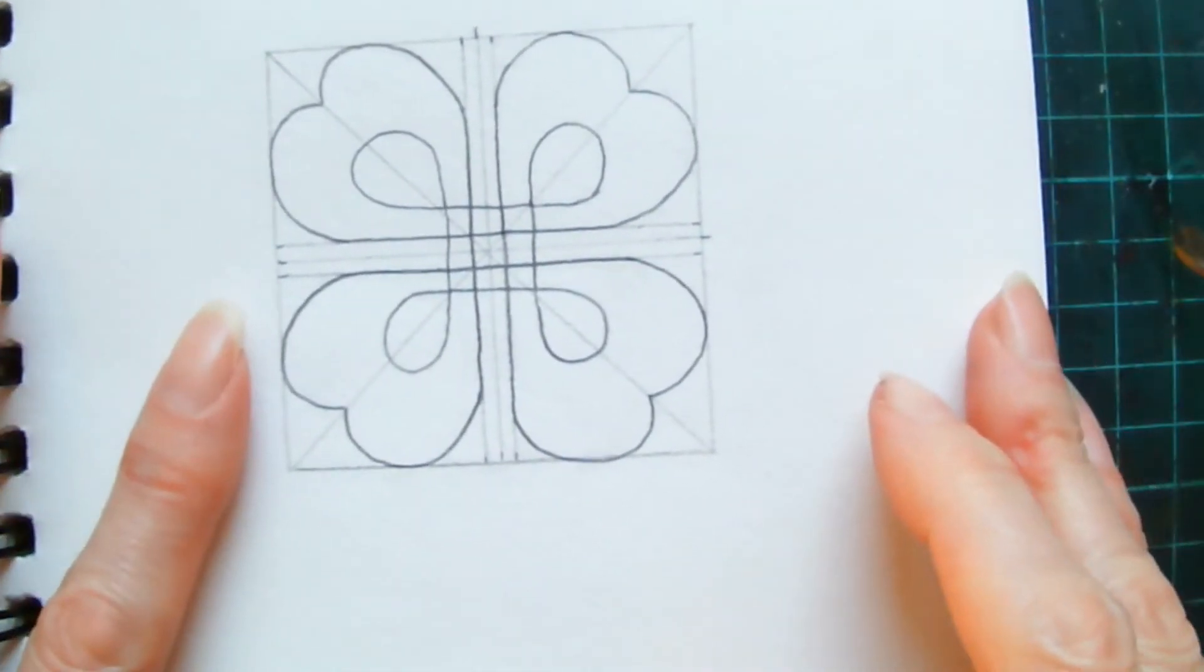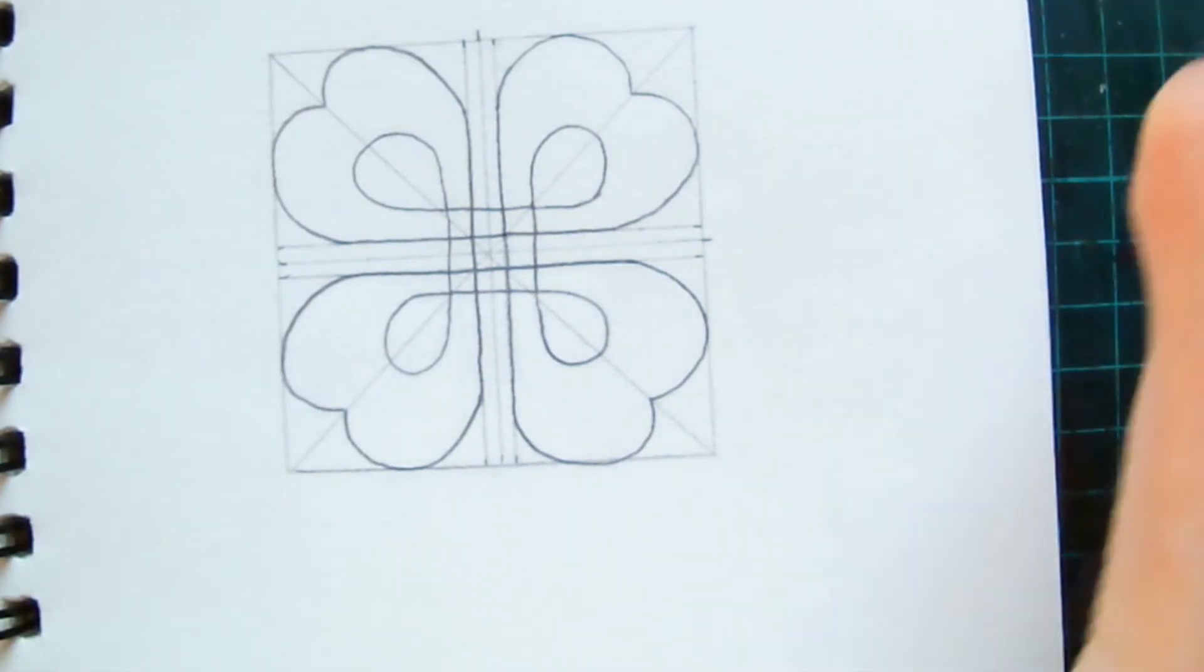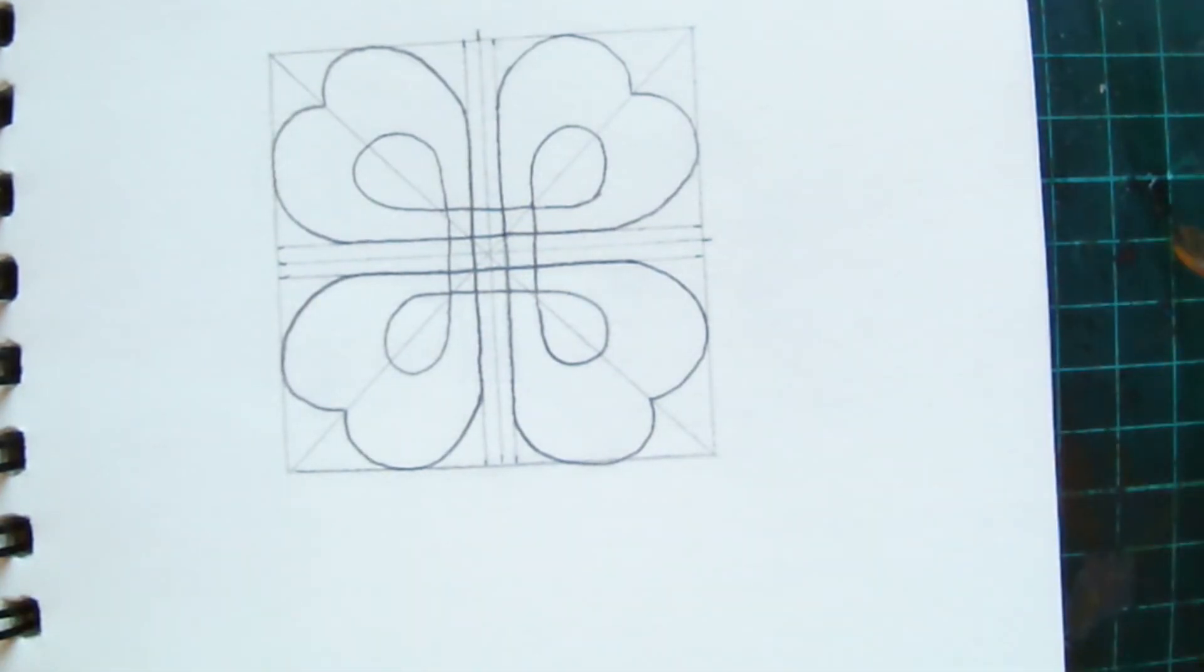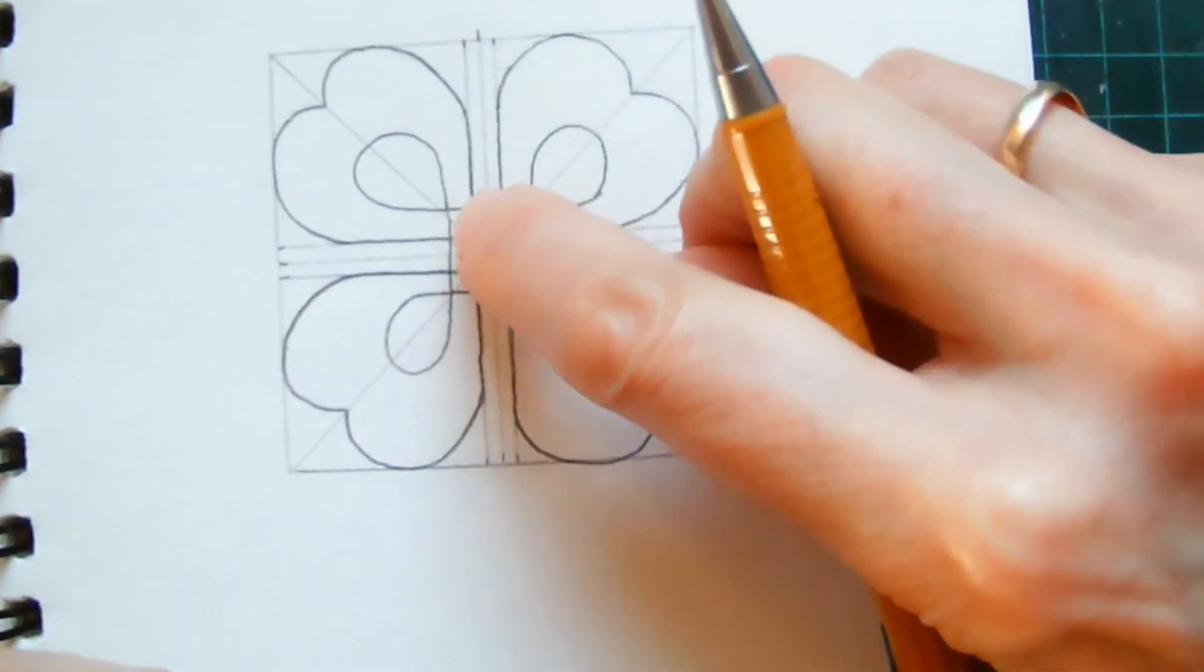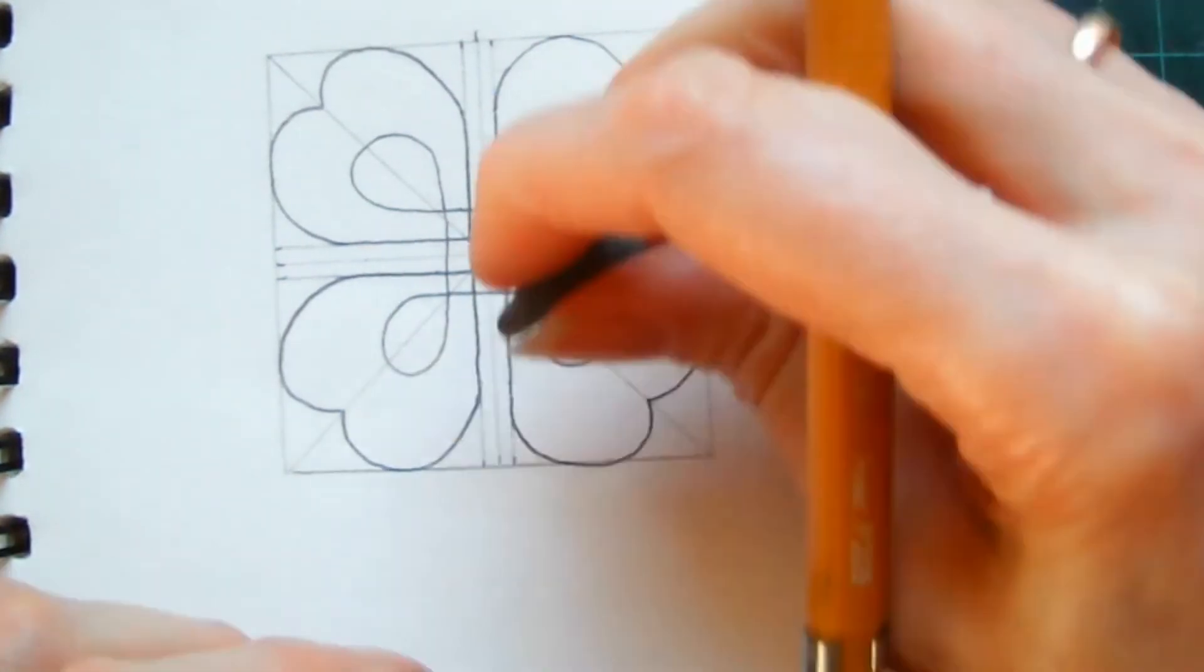And there you go, that's your basic outline done. So all it remains for you to do now is to do your overs and unders. So I'm going to make this one an over, so I'm going to rub out these two lines.